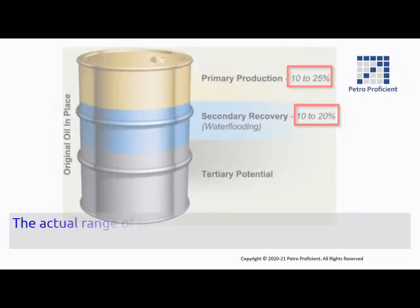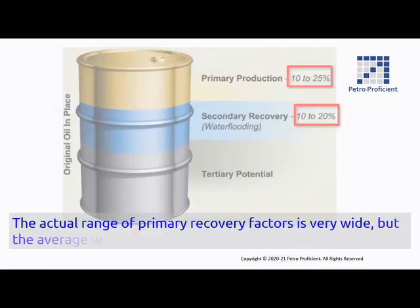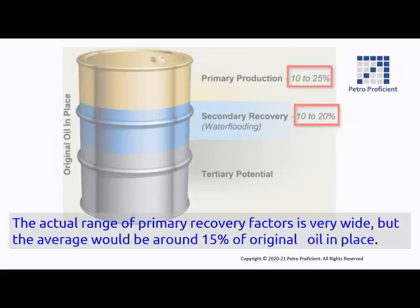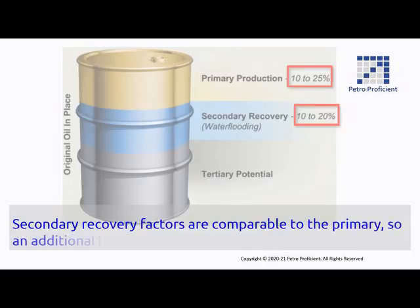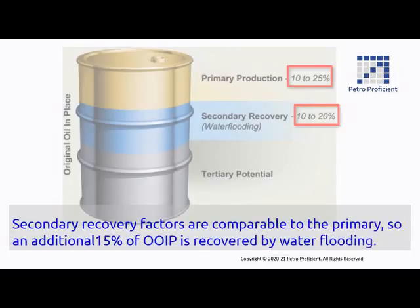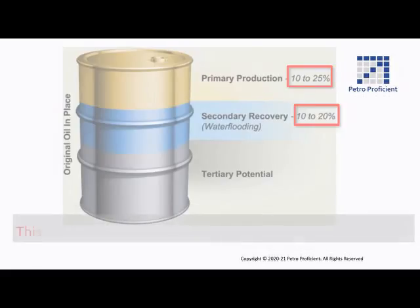The actual range of primary recovery factors is very wide, but the average would be around 15% of original oil in place. Secondary recovery factors are comparable to the primary, so an additional 15% of original oil is recovered by water flooding. This leaves 70% of original oil in place unrecovered.